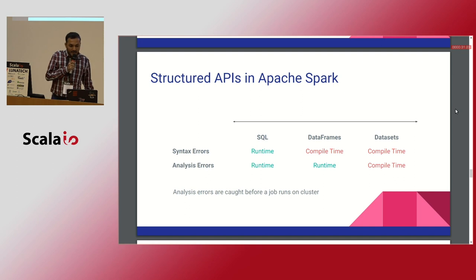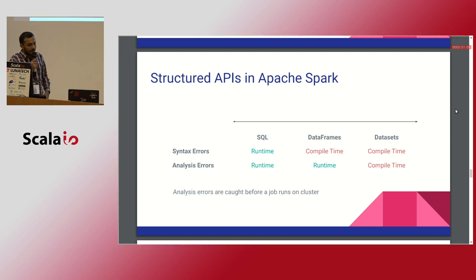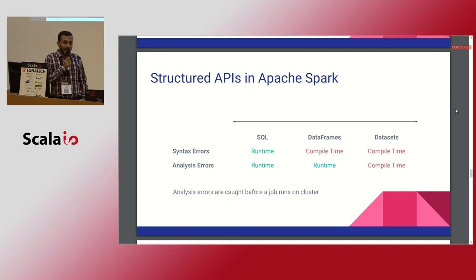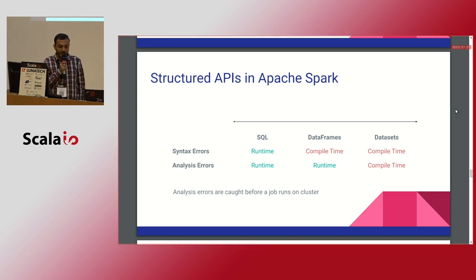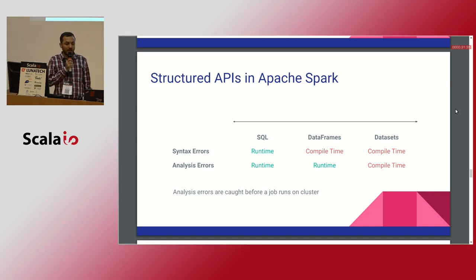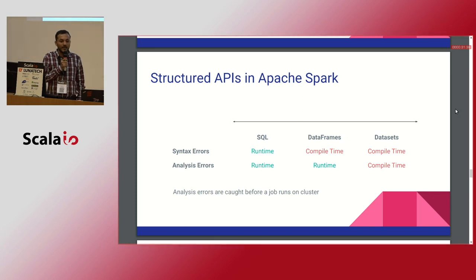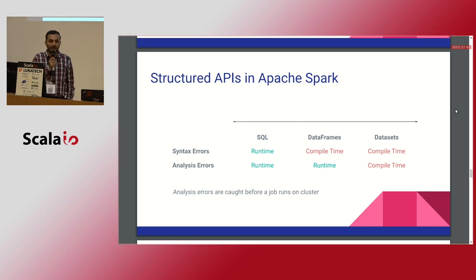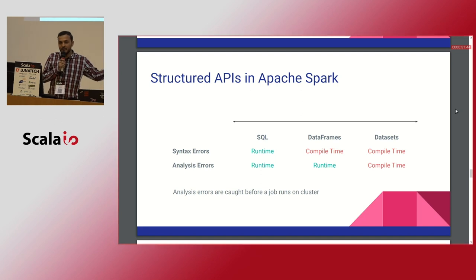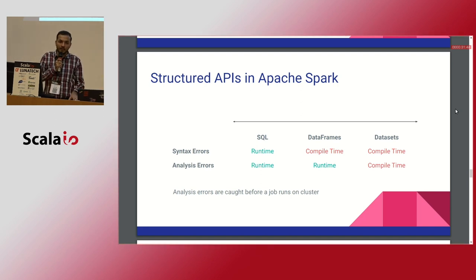The bottom line for structured APIs in Apache Spark: Spark SQL gives you syntax errors and analysis errors both at runtime. With DataFrame, you get syntax errors at compile time but analysis errors at runtime. With Dataset type-safety, you get both analysis and syntax errors at compile time.